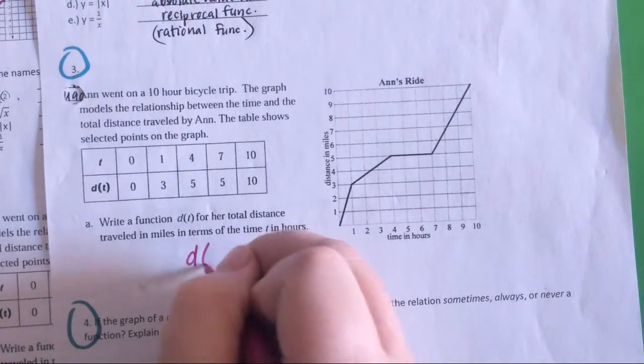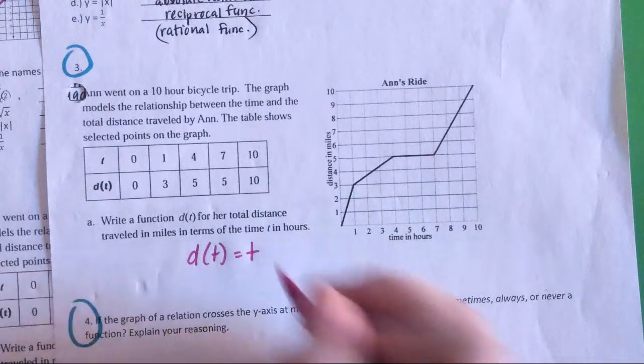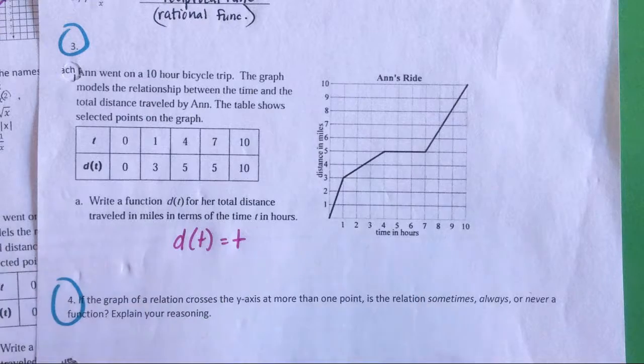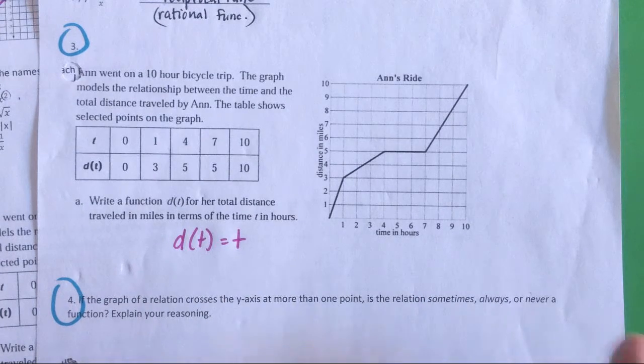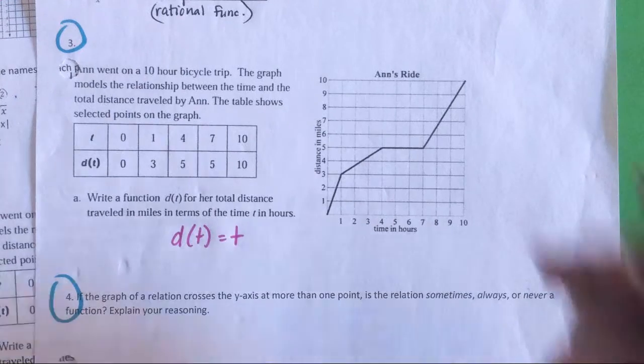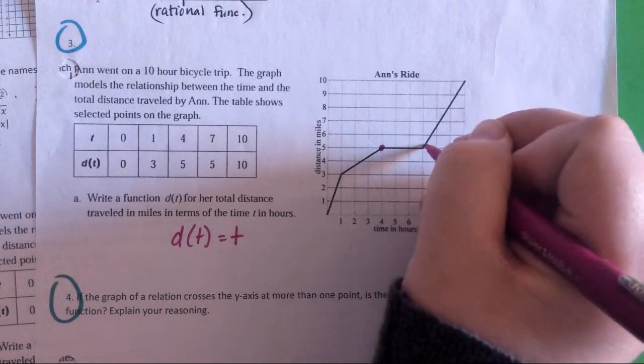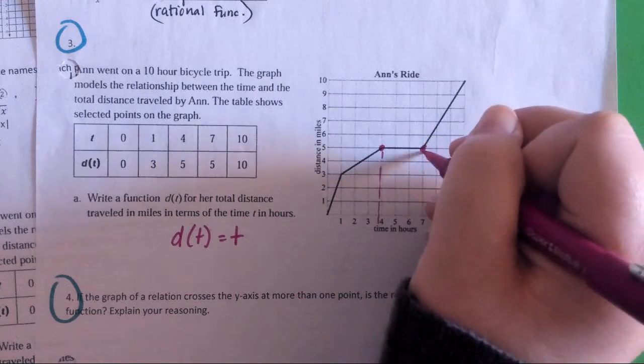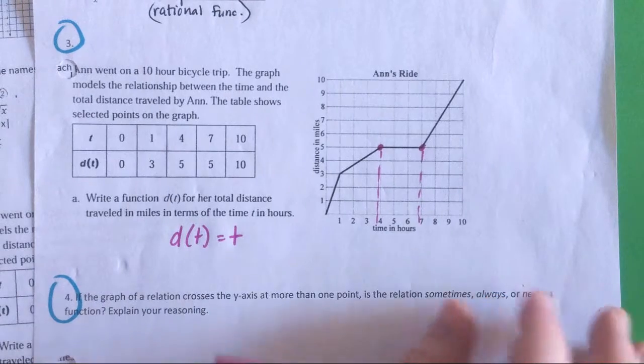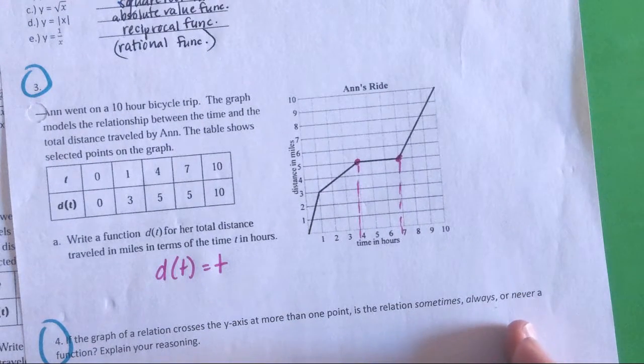So for d of t, we're just going to put t. She ended up going 10 miles because if we plug in t is 10, that is how many miles she went. Okay, but poor Ann, actually she did a pretty good job, especially on that last stretch. There is a point where she stopped traveling. From 4 hours to 7 hours, she took a 3-hour break. So we were making fun of poor Ann, but she's actually not as bad as we think she is.